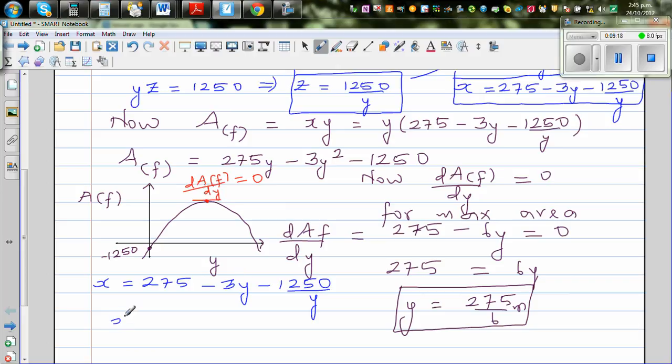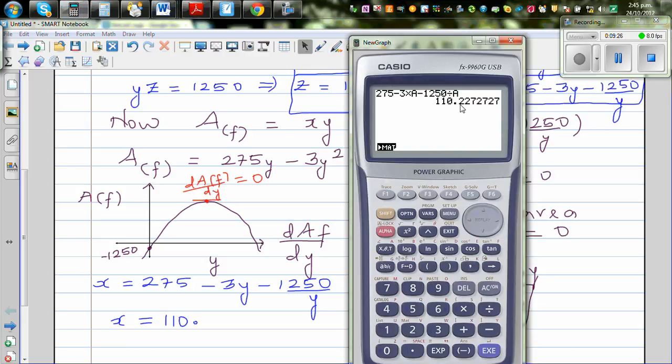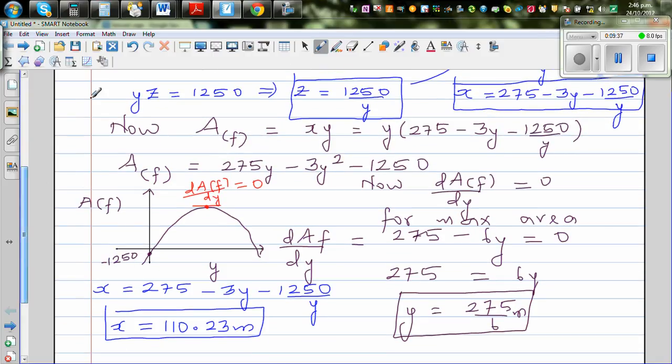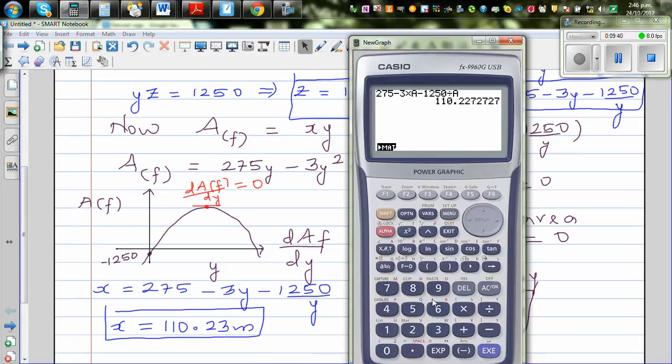If you press alpha A and press execute, that will give you this number. So now my calculator remembers alpha A as 45.83 recurring. I want to find X, so I'll go 275 minus 3 times alpha A minus 1250 divided by alpha A, which is 110.227272.